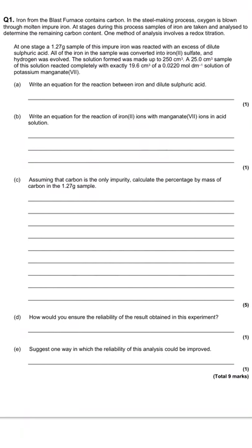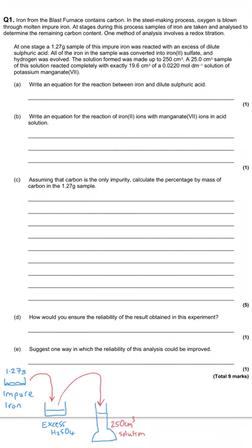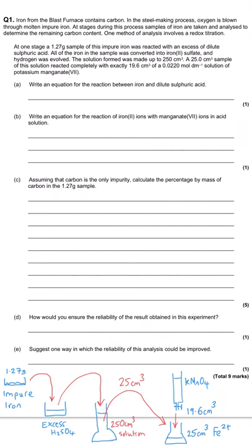So let's take a look at this first question. There is some contextual information at the top of the page about iron from the blast furnace containing carbon, and then we dive into the actual question itself. It says: a 1.27 gram sample of impure iron reacted with an excess of dilute sulfuric acid; all of the iron was then converted to iron sulfate; that solution was transferred to a different flask and made up to a volume of 250 cm³; then a 25 cm³ sample was reacted exactly with 19.6 cm³ of 0.022 mol dm⁻³ potassium manganate(VII).